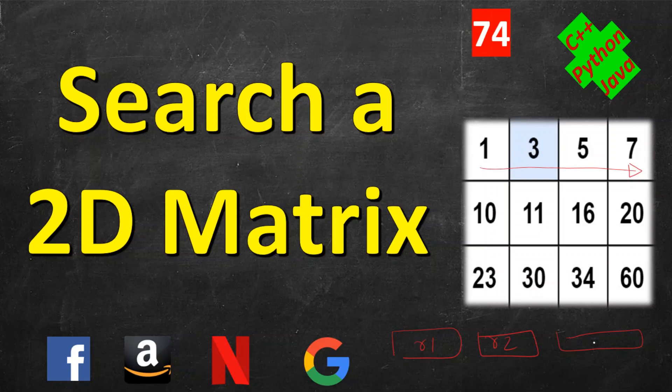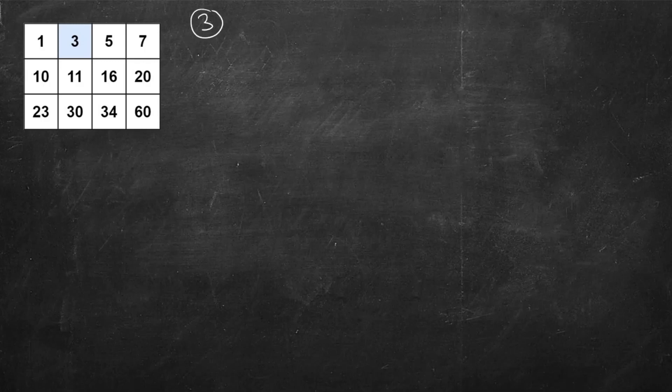It will be very similar to the way we do a search in a 1D sorted array — which is binary search. Of course you can search element-wise but that is not efficient. Here we have rows and columns instead of just one dimension, so first we need to figure out which row the number belongs to. For example, searching for 3: here 23 is the smallest element in this row and it's more than the target value 3, so all the numbers will be more — no point searching here.